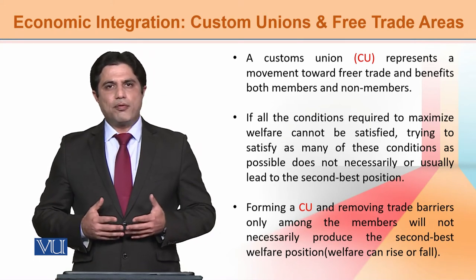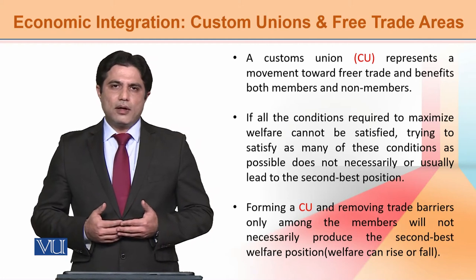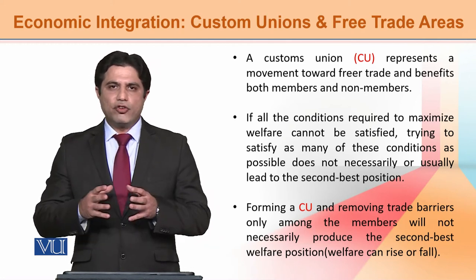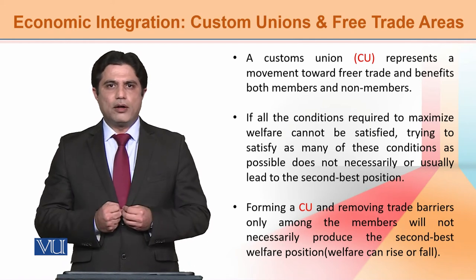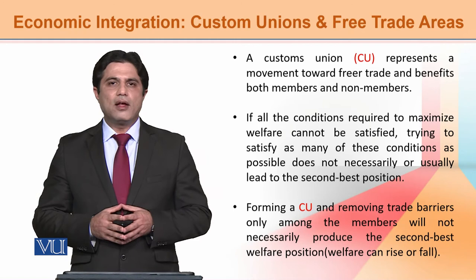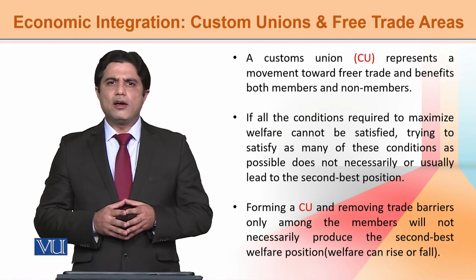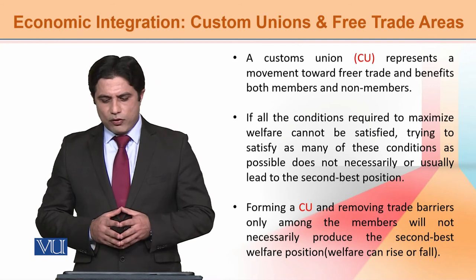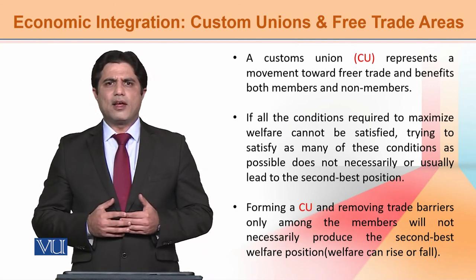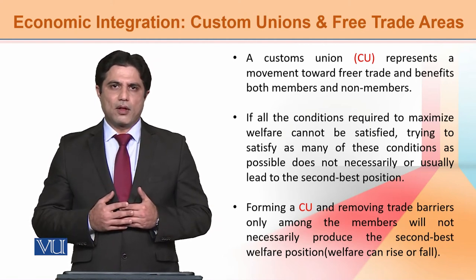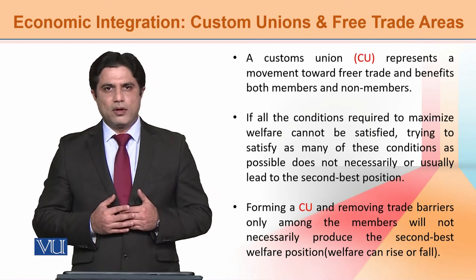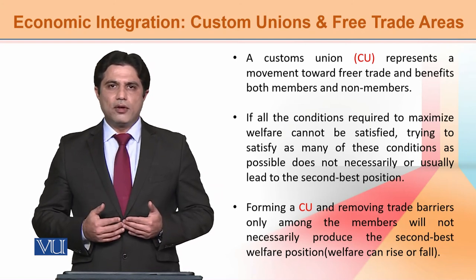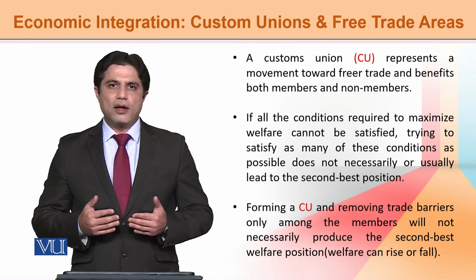दोनों forms के अंदर हम लोगों ने यही कहा कि freer trade would benefit the world as a whole. But इस case के अंदर एक addition हुआ customs union का — एक specific region या block of countries, जैसे European Union या NAFTA का concept है, वो भी to some extent पूरी दुनिया के लिए beneficial हो सकता है। But यहाँ यह challenge हुआ: theory of second best यह कहती है कि अगर आप free trade की तरफ नहीं जा सकते और optimum level achieve नहीं कर सकते, तो आप basically customs union बनाकर second best solution नहीं पा सकते।